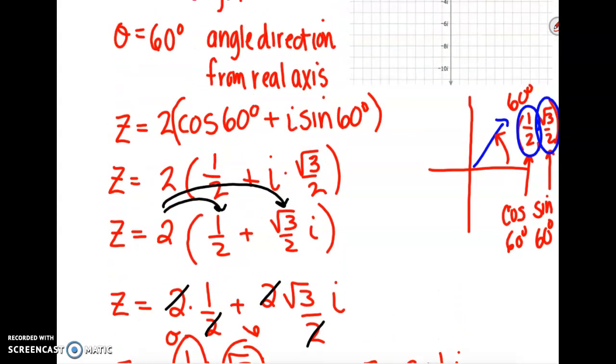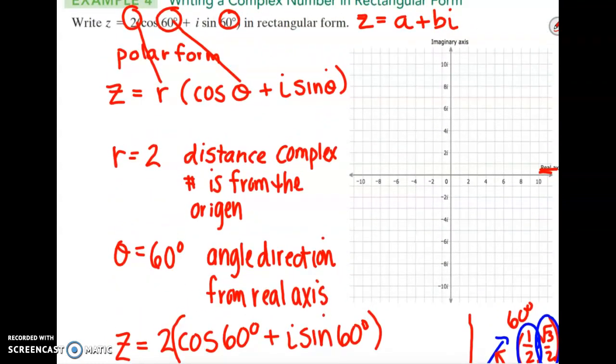So if we go back up and graph this in our complex plane, we're going right 1 and then up the square root of 3. So it's sitting right up in here. There's your z. And then this angle is right here at 60 degrees, and this distance right here is a radius of 2, an r value of 2.